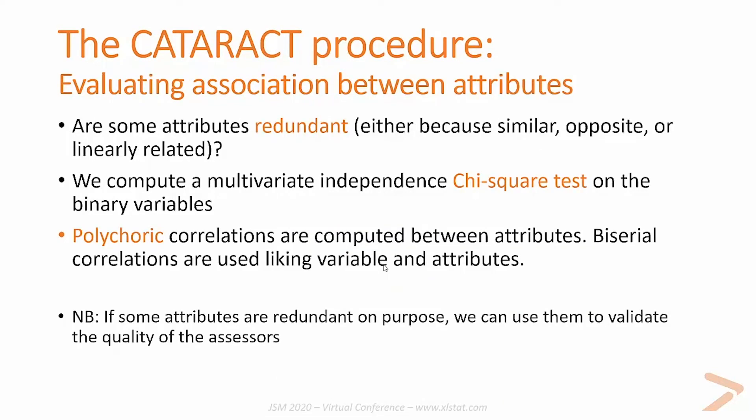The next step of the CATARACT procedure consists of evaluating the association between attributes. Are some attributes redundant — either because they are similar, totally dissimilar, or linearly related? To do that, we compute a multivariate independence chi-square test on the binary variables. That's a multivariate extension of the classical chi-square test run on a contingency table or cross-tab. If this test leads to rejection of the independence null hypothesis, pairwise comparisons can be computed. We also display polychoric correlations between the attributes, and if a liking score has been recorded, a biserial correlation between the liking score and each attribute.